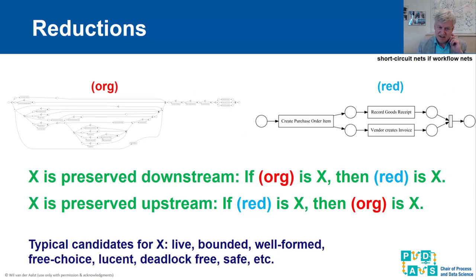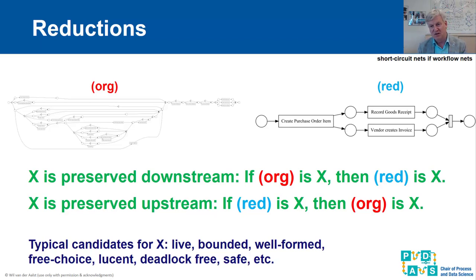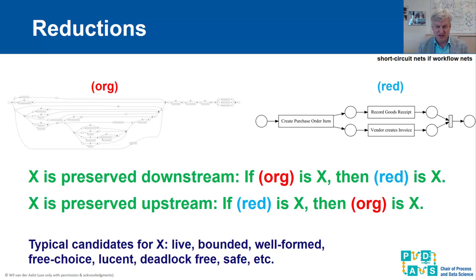Often we apply reductions in such a way that we would like to reason about these models or prove that the larger model has certain properties, and that implies that the smaller model has these properties or the other way around. To be more precise, let's talk about the original model and the reduced model. A property X is preserved downstream if the original model satisfies property X, then it is guaranteed that the reduced model also satisfies it. Property X is preserved upstream if the reduced model satisfies the property, then this implies that also the larger model satisfies property X.